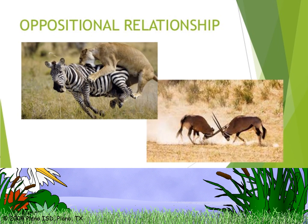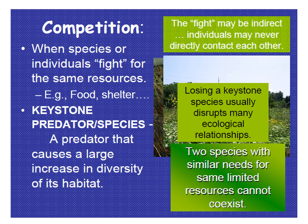Moving to oppositional relationships: competition is when animals compete with one another for food, shelter, and mates in order to survive. Whoever wins the competition gets all the benefits — food, shelter, or a mate. In competition, two species are competing against each other. For example, hyenas and cheetahs compete for food.